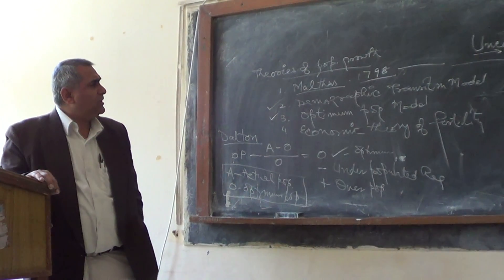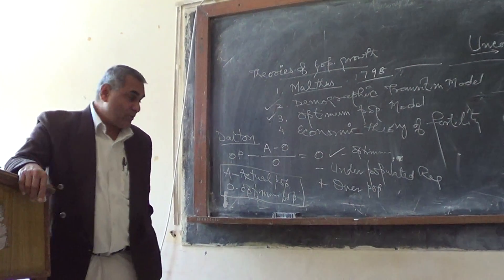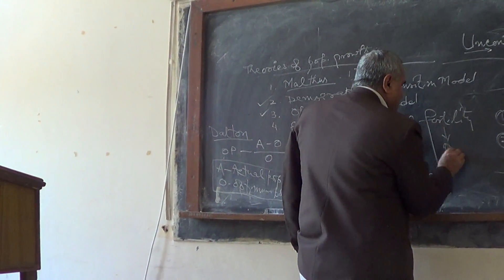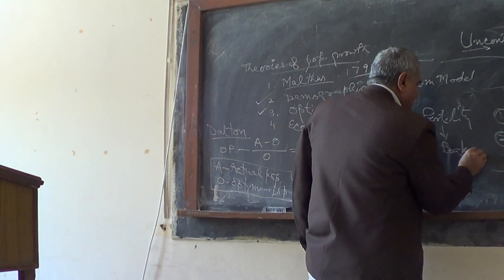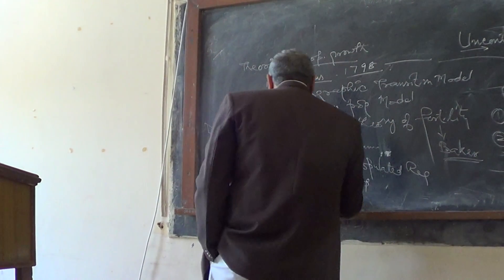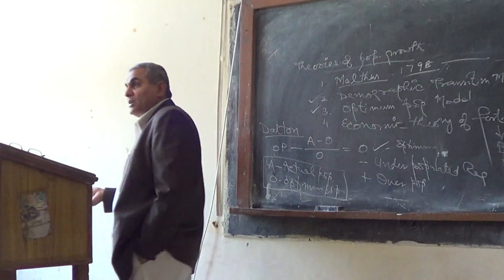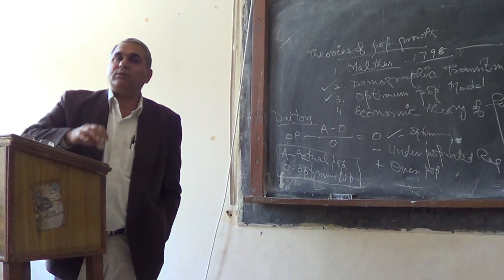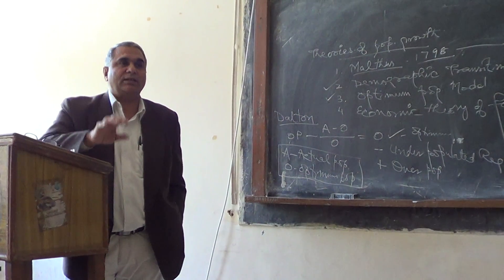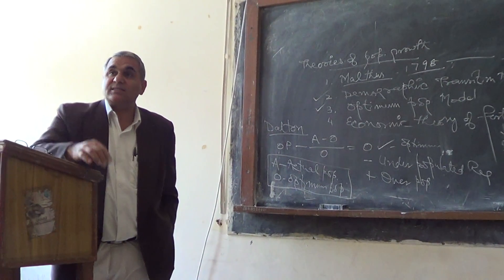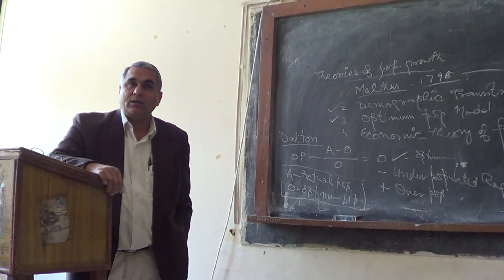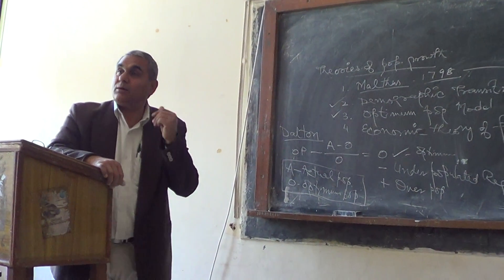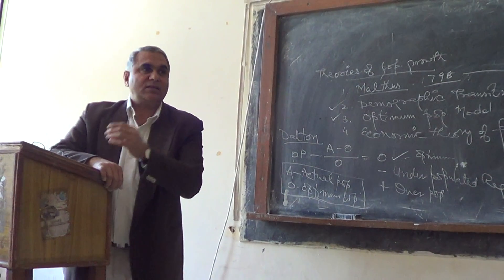Then there is the Economic Theory of Fertility, proposed by economist Becker. This theory says how many children will be born is determined entirely by money and economic conditions — the purchasing capacity. Children give two types of happiness: one is physical, and one is metaphysical or psychological.